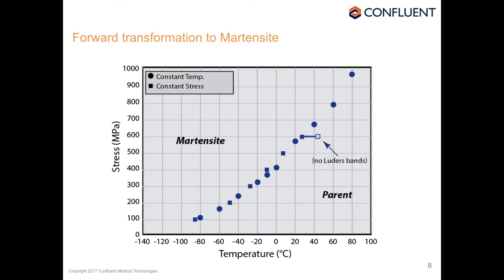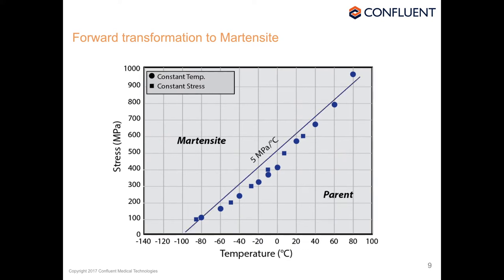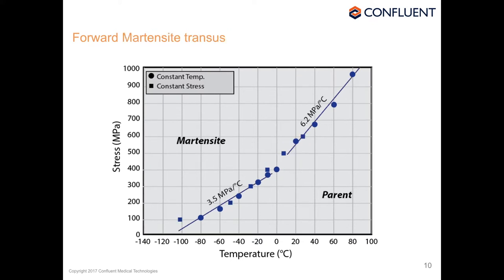Strain localization causes the transformation to proceed at the martensite start temperature. The parent phase remains ambiguous. Common in the literature is to fit a straight line and call it 5 MPa per degree C. But you could also fit two straight lines — one with almost twice the slope of the other. You don't do that arbitrarily; you need a sound rationale.